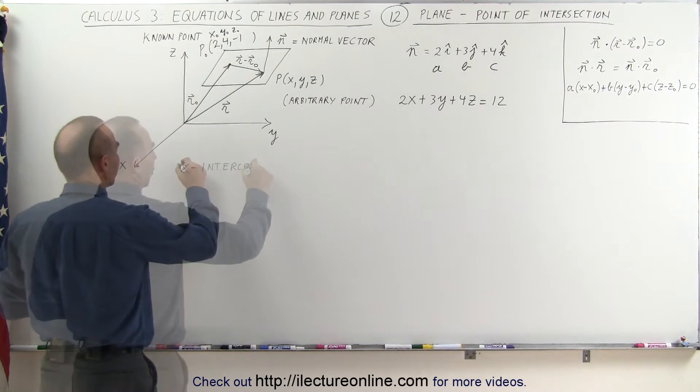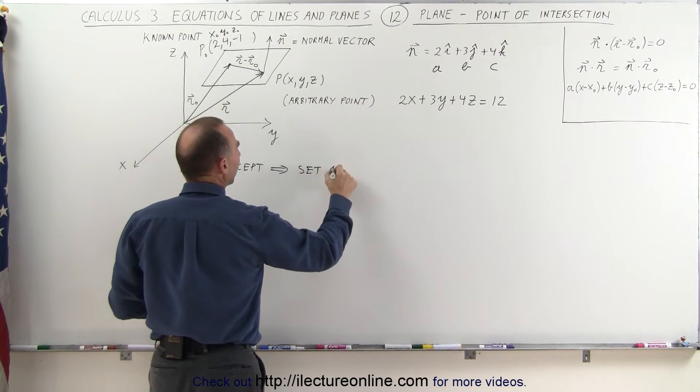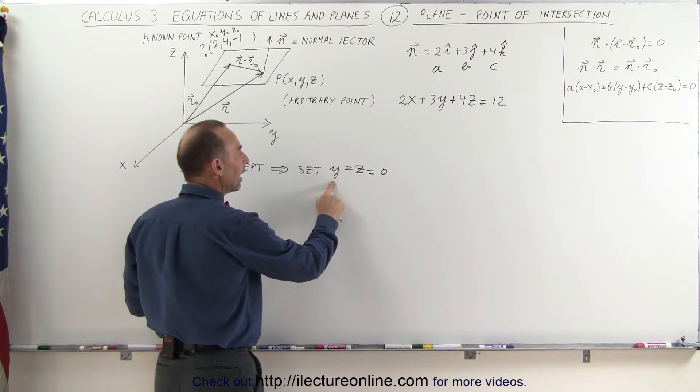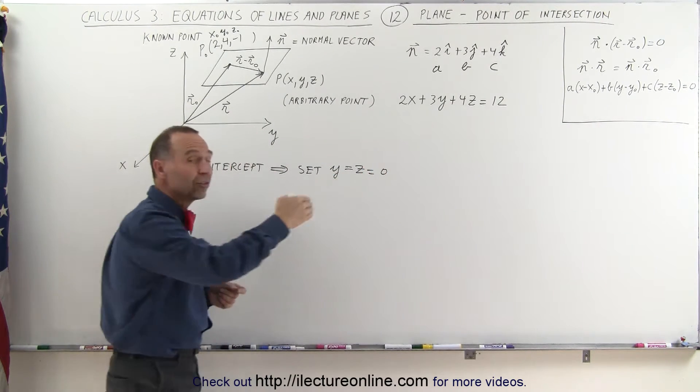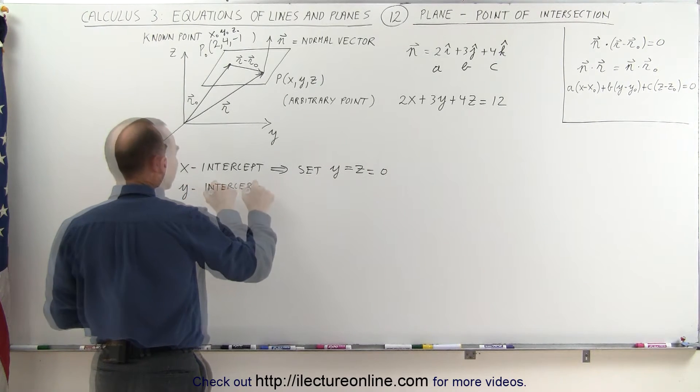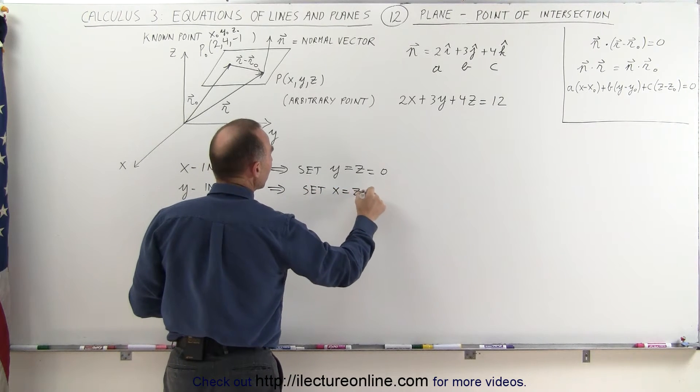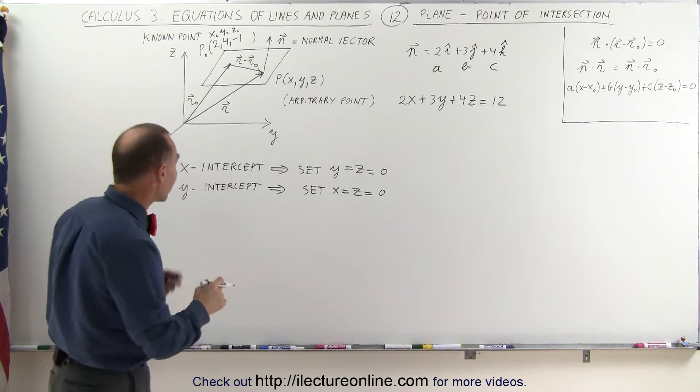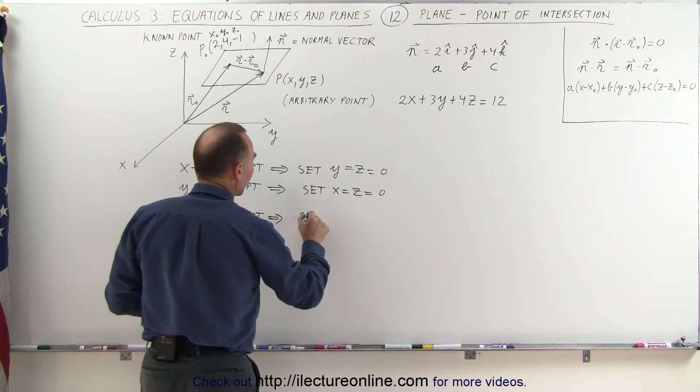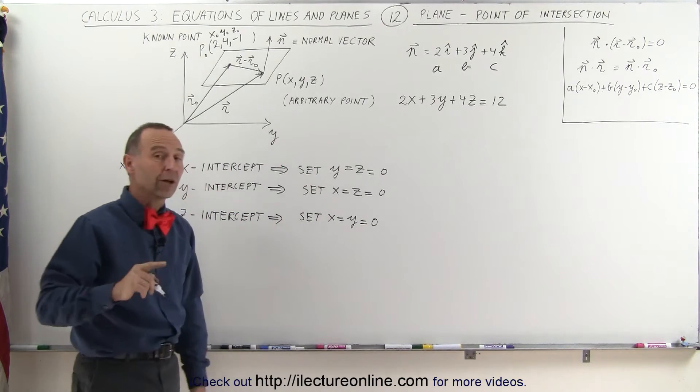To find the x-intercept, we need to set y equal to z equal to zero. If y and z equal zero, that's where the plane crosses the x-axis. To find the y-intercept, we set x equal to z equal to zero, where the plane crosses the y-axis. Finally, to find the z-intercept, we set x equal to y equal to zero, where the plane crosses the z-axis.